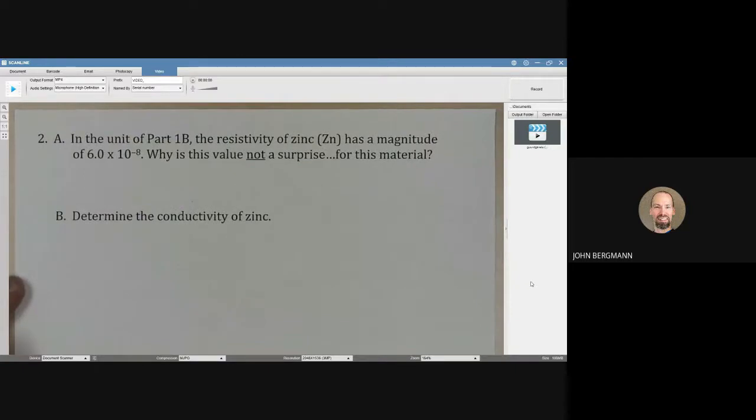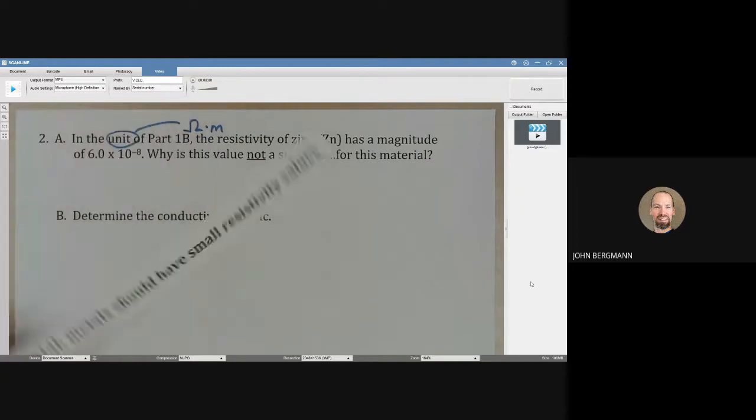In the unit of part 1b, which is the ohmmeter, the resistivity of zinc has a magnitude of 6.0 times 10 to the negative eighth. Why is that value not a surprise for this material?